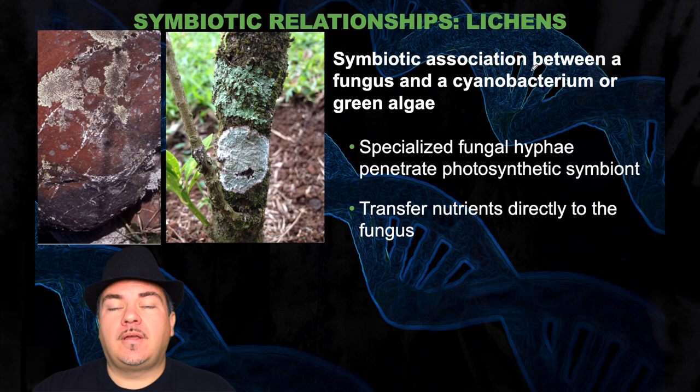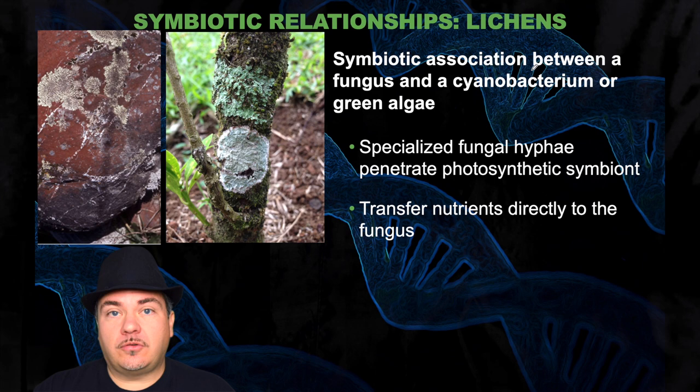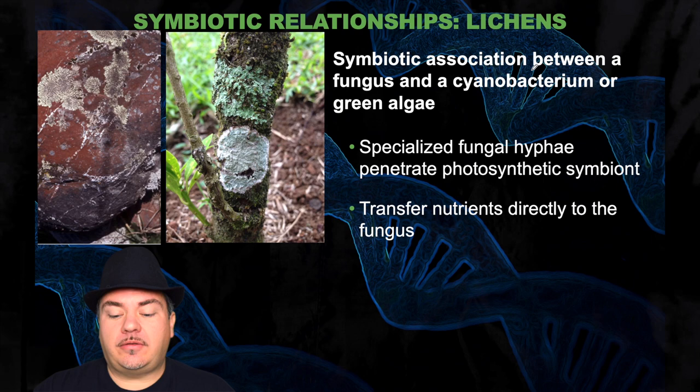Fungi can also form symbiotic relationships. One of these is called lichens — a symbiotic association between a fungus and a cyanobacterium or green algae. Cyanobacteria are blue-green bacteria. Both cyanobacteria and green algae can do photosynthesis, which means they're producing sugar molecules. The fungus has specialized hyphae that penetrate the photosynthetic symbiote, and these hyphae transfer nutrients directly to the fungus. Lichens can take many forms — they can be crust-like, hair-like, or leaf-like.